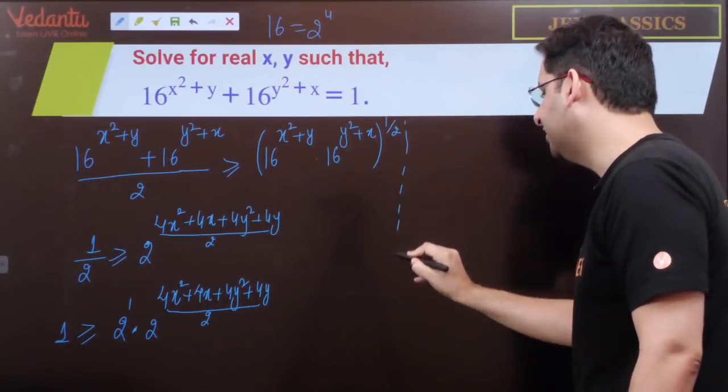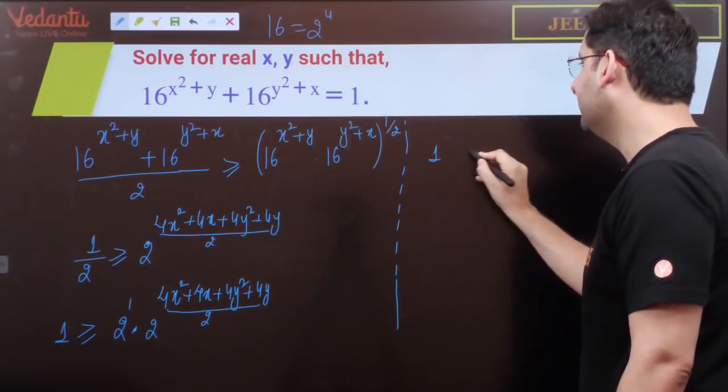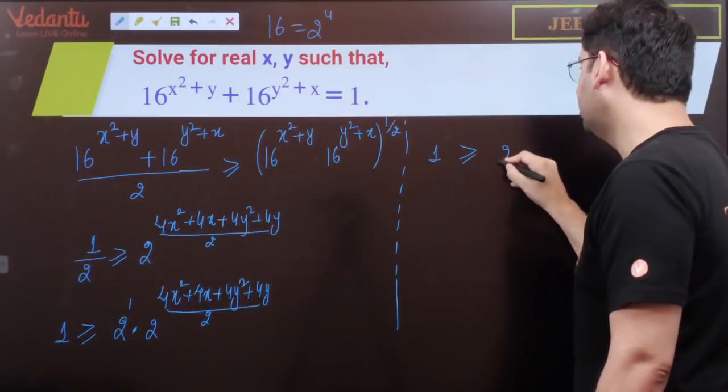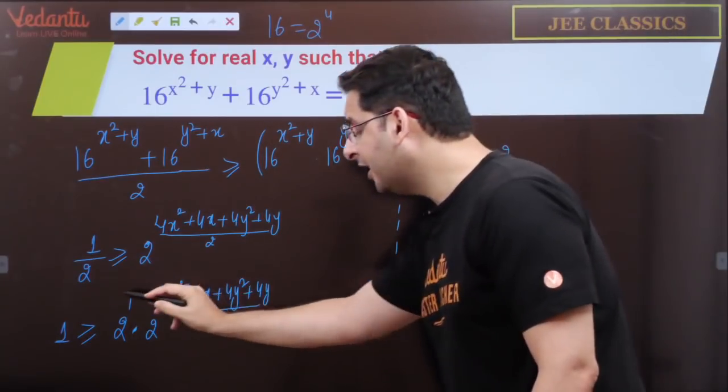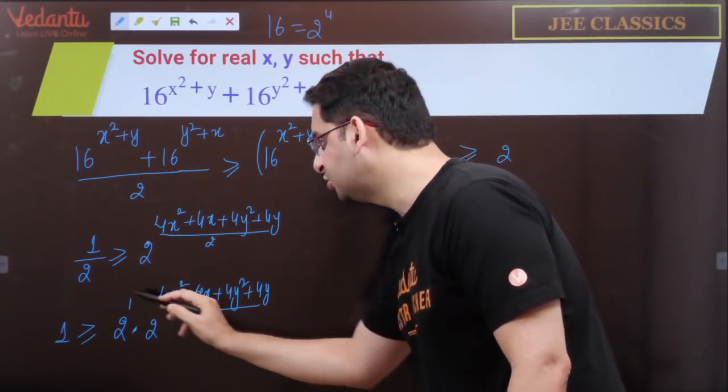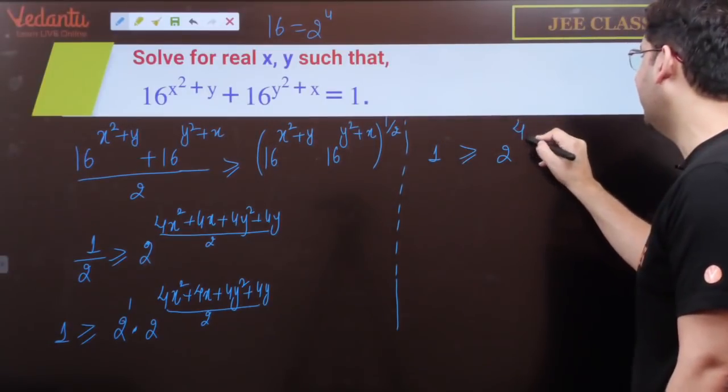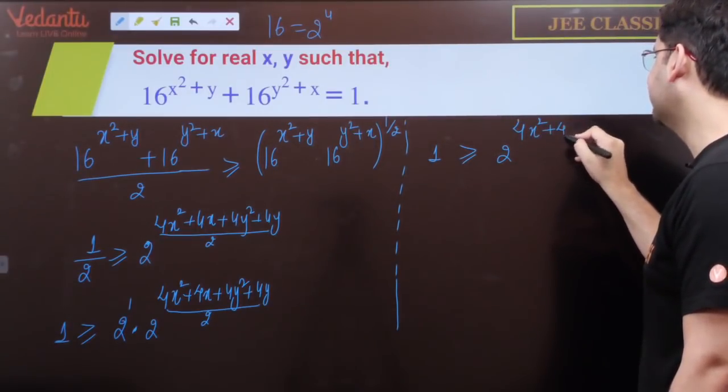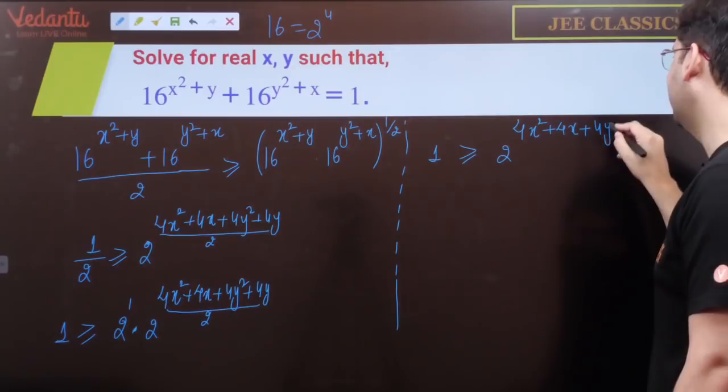When bases are same, add the powers. Let us continue here. So 1 ≥ 2^[4x²+4x+4y²+4y+2]/2, which is 4x²+4x+4y²+4y+2.